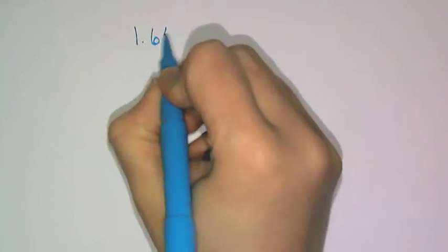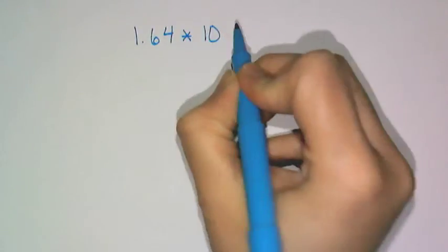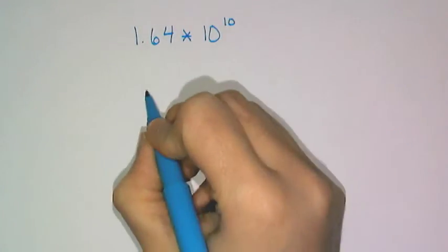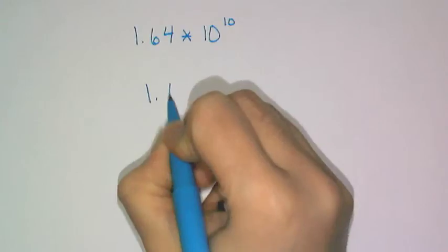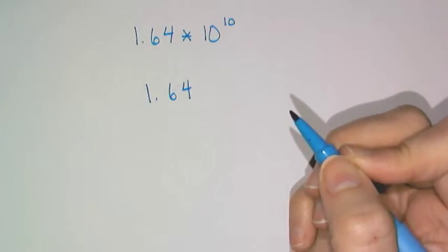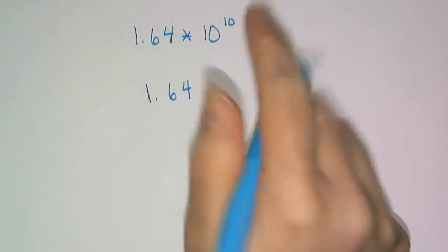Now let's convert from scientific notation to standard notation, meaning the normal way numbers look. So if I have 1.64 times 10 to the 10th power, then I'm going to write 1.64, and I need to move the decimal 10 spaces in this direction, because a positive 10 power means a big number.